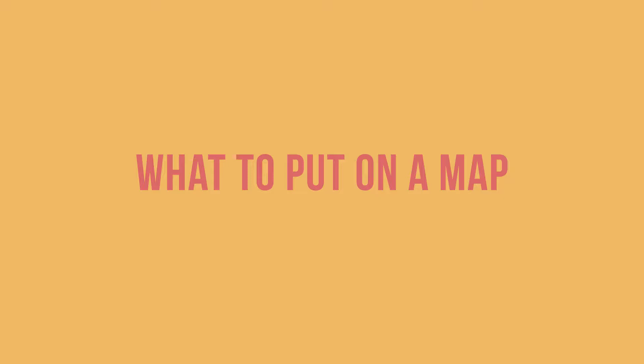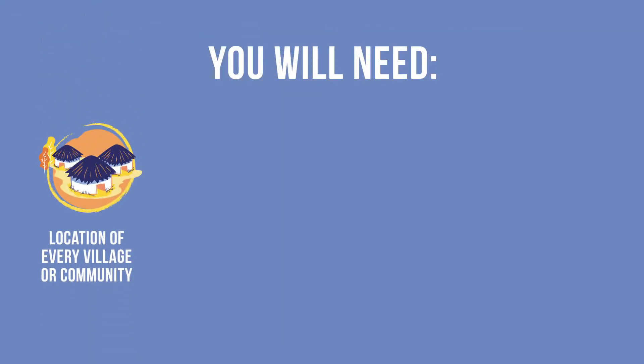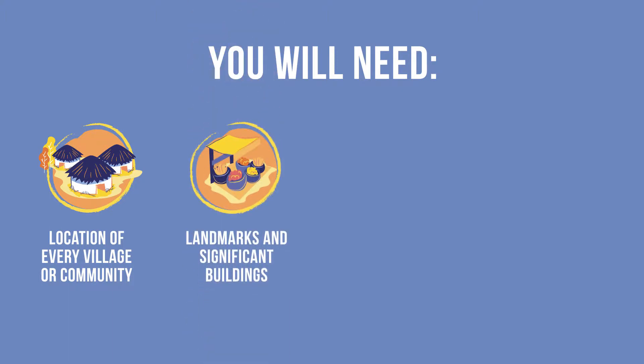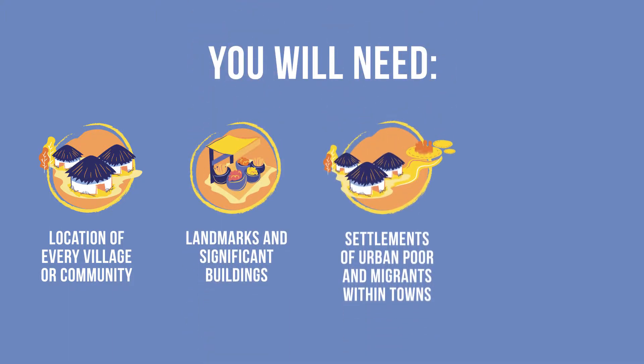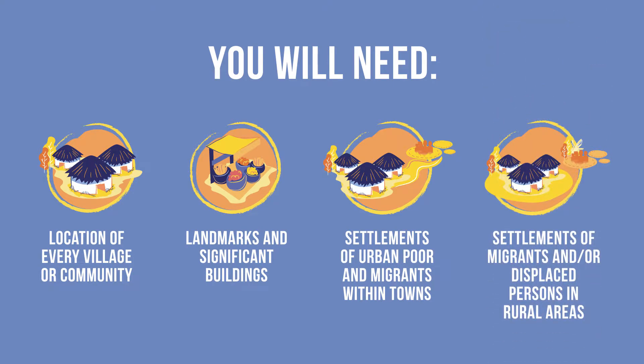You should update your map at least once a year before annual planning. Here is the information you will need: the location of every village or community, landmarks and significant buildings, settlements of urban poor and migrants within towns, and settlements of migrants and displaced persons in rural areas. Let us look closely at each of these to see why they are useful in planning and monitoring.